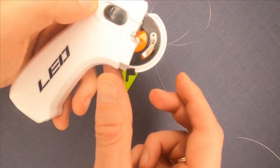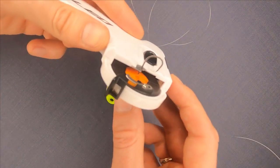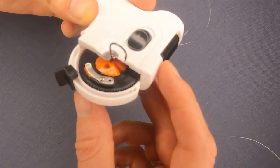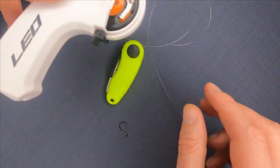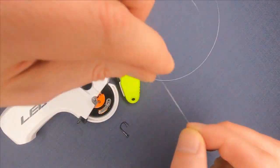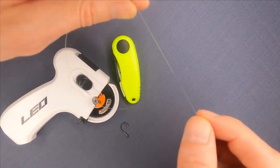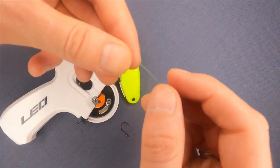As you can see, it holds the hook tight. You take the line and make a small loop which we will insert under the metal part located on the wheel.